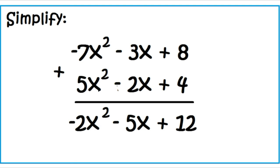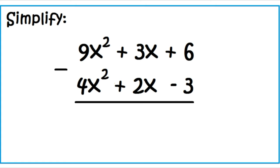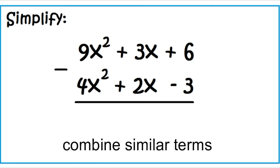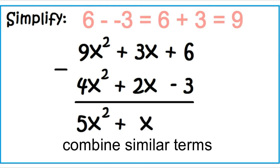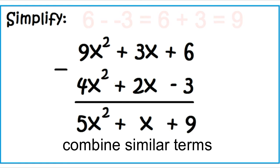Simplify: the quantity 9X squared plus 3X plus 6 minus the quantity 4X squared plus 2X minus 3. 9X squared minus 4X squared is 5X squared. 3X minus 2X is X. 6 minus negative 3 is 9. The answer is 5X squared plus X plus 9.